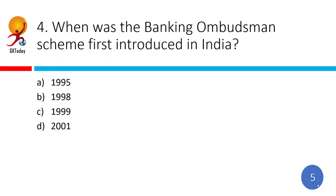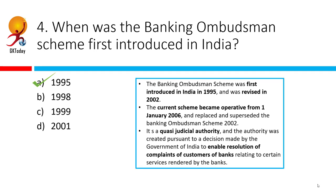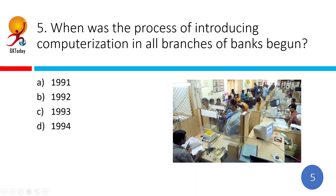When was the Banking Ombudsman Scheme first introduced in India? The correct answer is 1995. The Banking Ombudsman Scheme was launched with the objective of providing quicker solutions to customer complaints. It was first introduced in 1995, then revised in 2002, and the current scheme has been operative from 1st January 2006. A Banking Ombudsman is a quasi-judicial authority, and the idea is to resolve customer problems with banks as soon as possible.